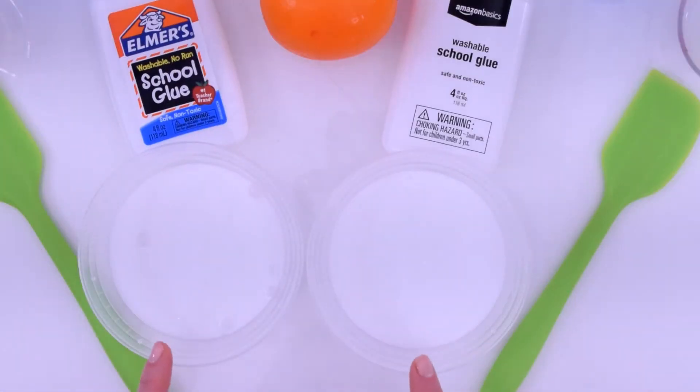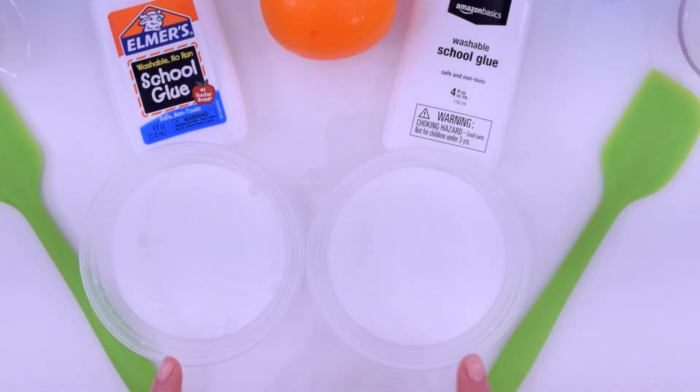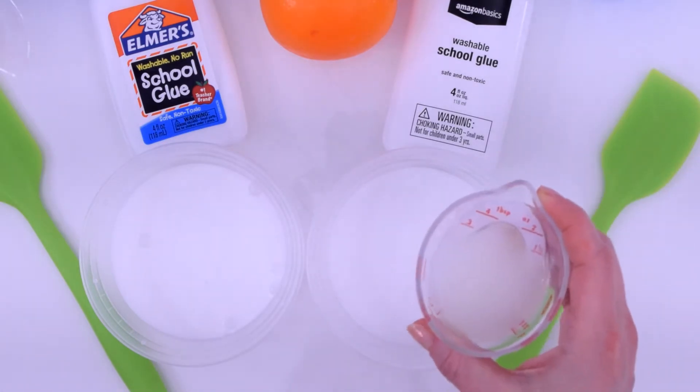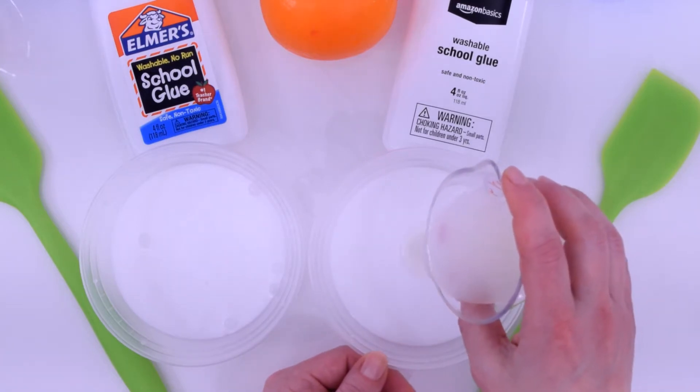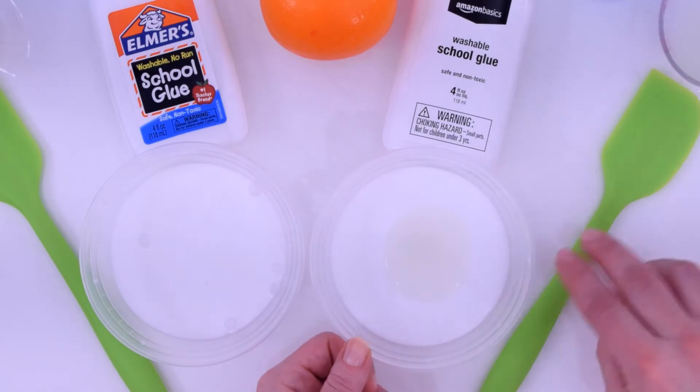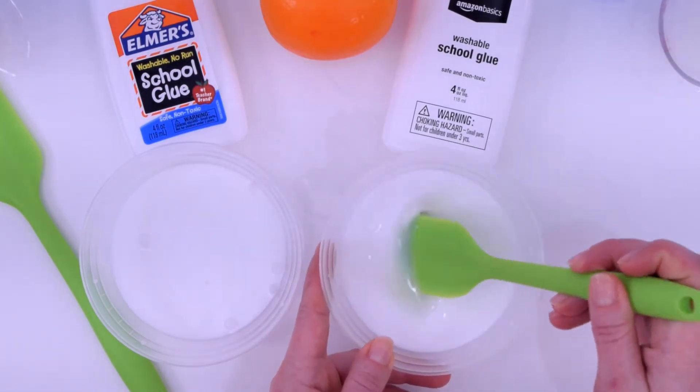So I have my two glues, and for activator I'm using Sta-Flo. I'm going to start with three tablespoons of Sta-Flo. I probably won't use all of it, but I'll put a little bit into this Amazon one. It's about one tablespoon and go from there.